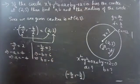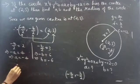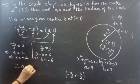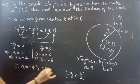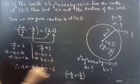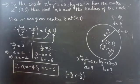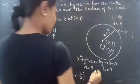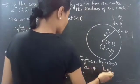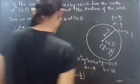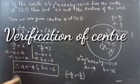From the y-coordinate: -b/2 = 3, so -b = 6, therefore b = -6. So a = -4 and b = -6.